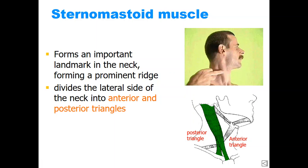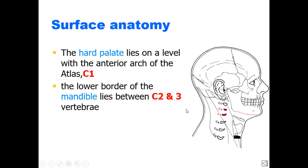In front of the sternocleidomastoid muscle we have the anterior triangle of the neck, bounded by the midline, the muscle, and the mandible. The posterior triangle lies behind the muscle. We can see the surface anatomy and shadow of the sternocleidomastoid muscle clearly in the picture.